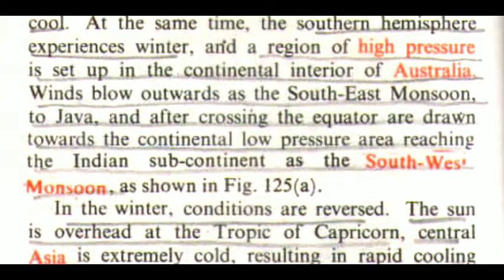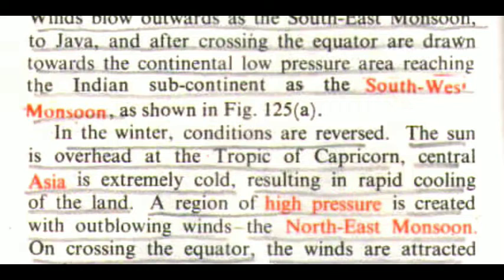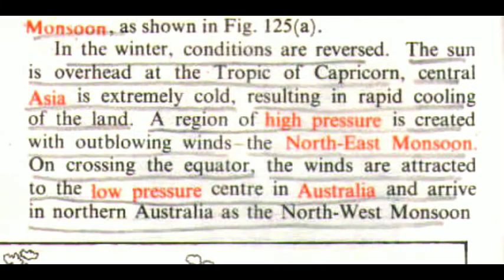In the winter, conditions are reversed. The sun is overhead at the Tropic of Capricorn. Central Asia is extremely cold, resulting in rapid cooling of the land. A region of high pressure is created with out-blowing winds. The northeast monsoon, on crossing the equator, the winds are attracted to the low-pressure centre in Australia, and arrive in northern Australia as the northwest monsoon.